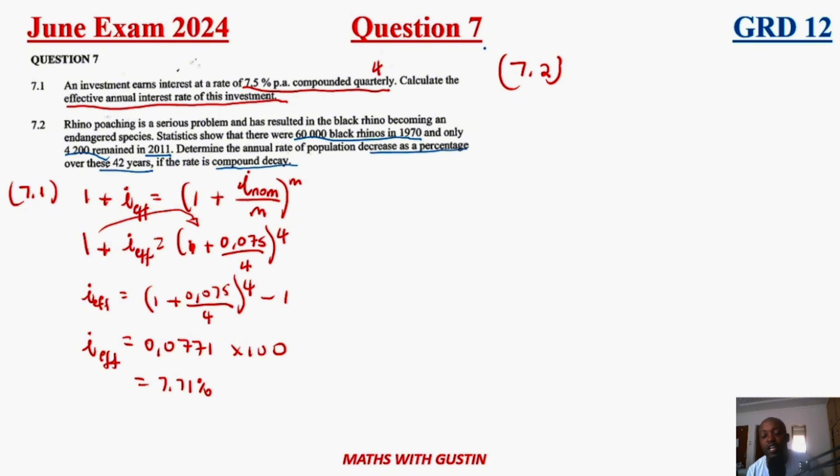Basically, they're asking us to calculate the depreciation rate at which there's a decay in the population of the rhino species. If you go to your formula sheet, you see that you have this formula which is the depreciation formula. The initial amount was 6,000 and then it has decayed to 4,200.